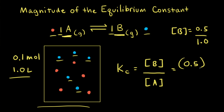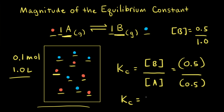Next, we do the same thing for A. There are also 5 red spheres, so the concentration of A is also 0.5 molar. Plugging into our equilibrium constant expression: 0.5 divided by 0.5 equals 1. Therefore, Kc, the equilibrium constant, is equal to 1 at whatever temperature we have for this hypothetical reaction.